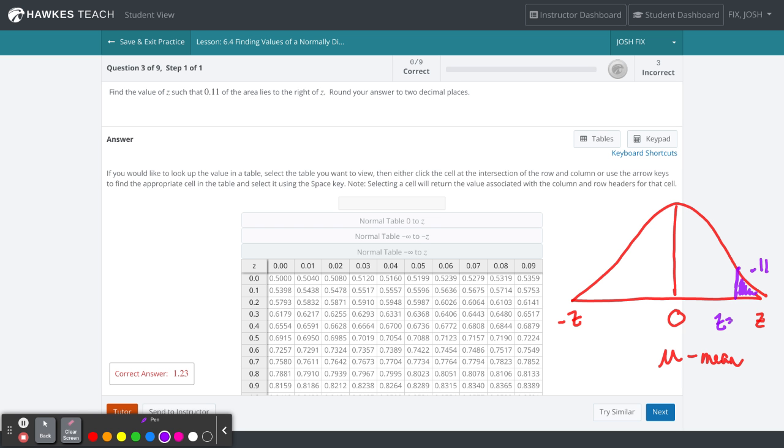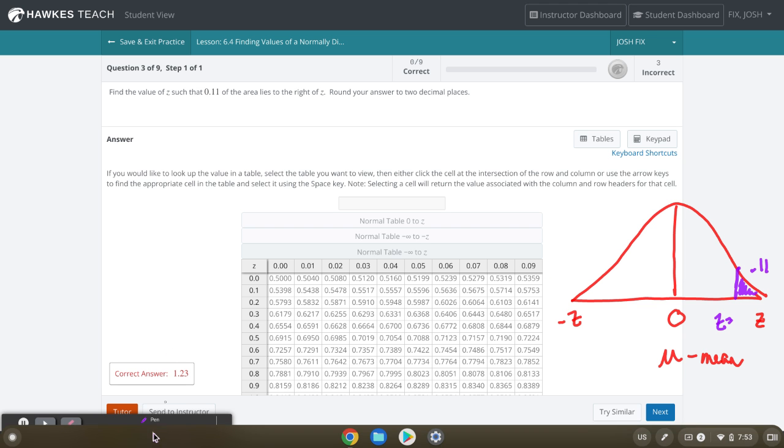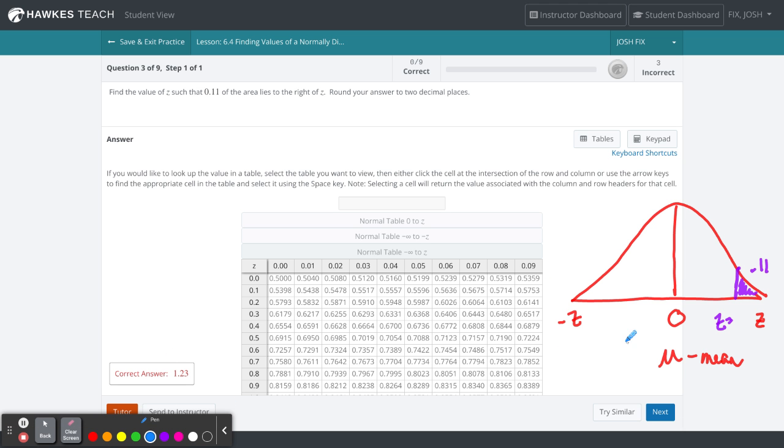So we go and take a look at this table. The table we're looking at today in this video is going to be from negative infinity to positive z. That means using this table, we're going to look at from negative infinity to whatever z-score. If I had a z-score here, I could calculate also.